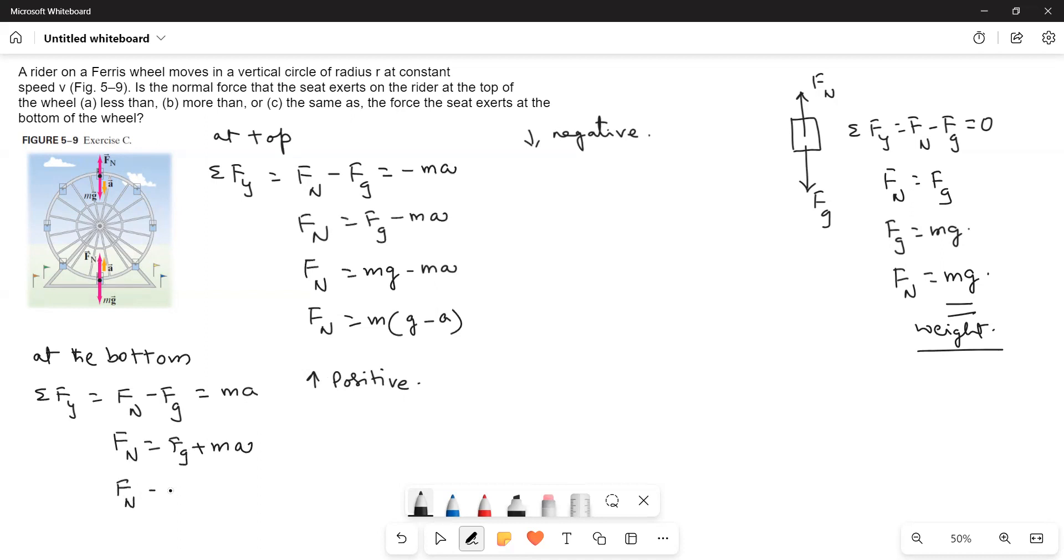Therefore, Fn is equal to Mg plus Ma, or Fn is equal to M times (G plus A). Therefore, now we will see here are the three cases.